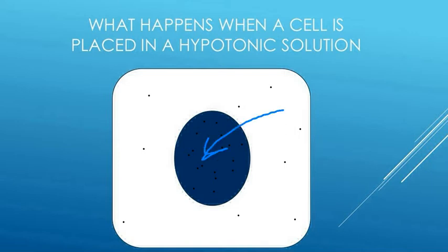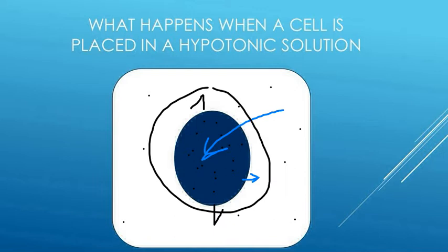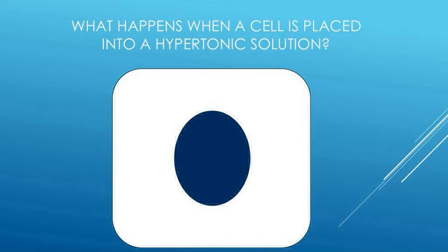So we have a big arrow into the cell. We have a little bit of water leaving the cell. So what's going to happen? Water from outside in the hypotonic solution is going to move inside the hypertonic cell. So if we pump something full of water, if we put water into a balloon, what's going to happen to the balloon? It's going to expand. And the cell membrane is going to get filled up with water.